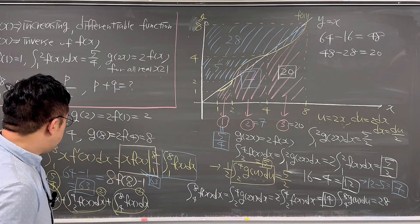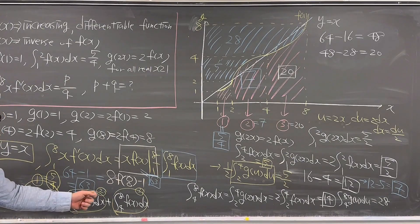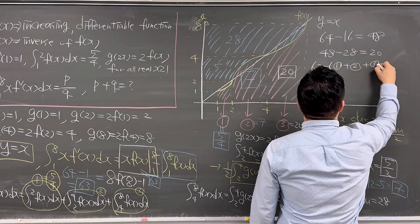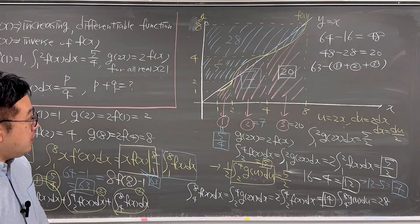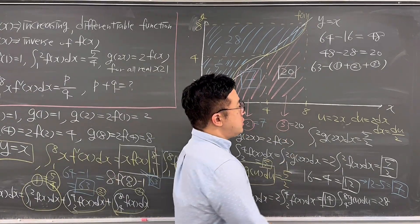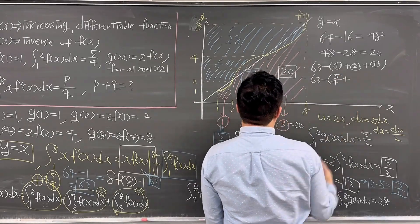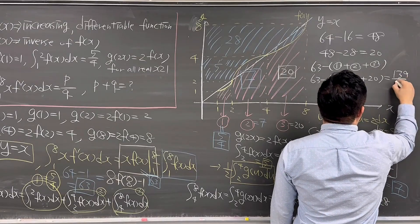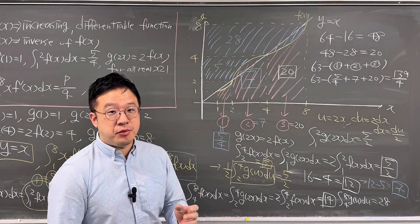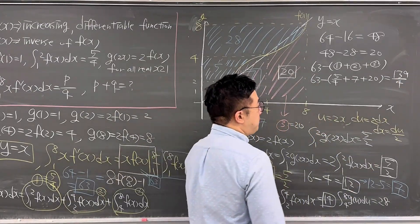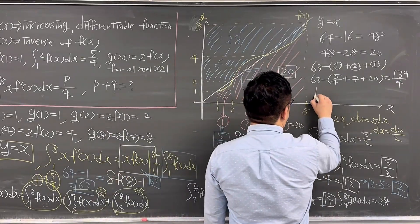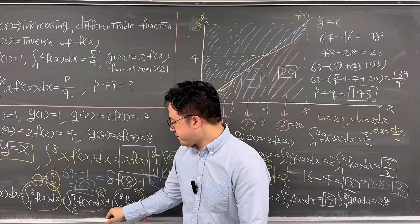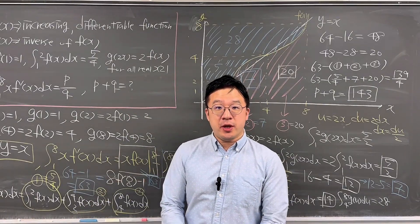Now we have everything. The answer is 63 minus (integral #1 + integral #2 + integral #3) = 63 − (5/4 + 7 + 20) = 139/4. Since 139 and 4 are relatively prime, P = 139 and Q = 4, so P + Q = 143. That's the answer — a pretty interesting killer question from Korean SAT Math!